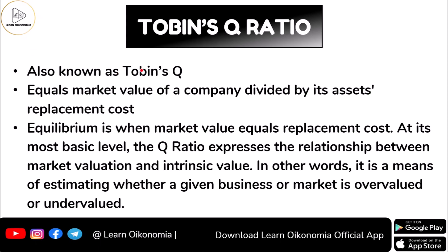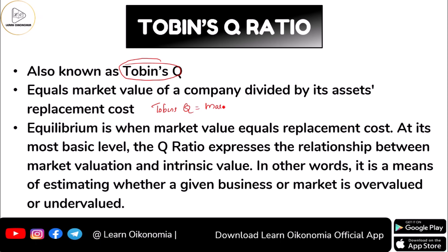The Tobin's Q ratio, also known as Tobin's Q, is equal to the market value of a company divided by its asset replacement cost. So Tobin's Q equals market value divided by replacement cost — very simple.